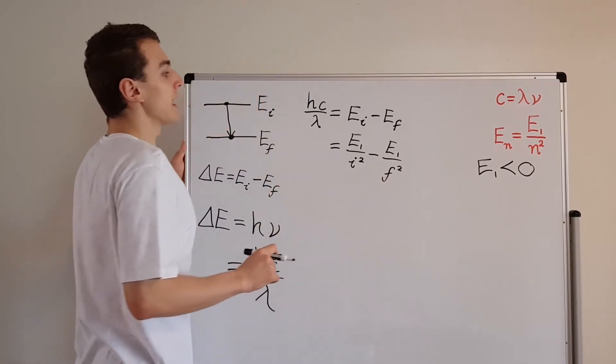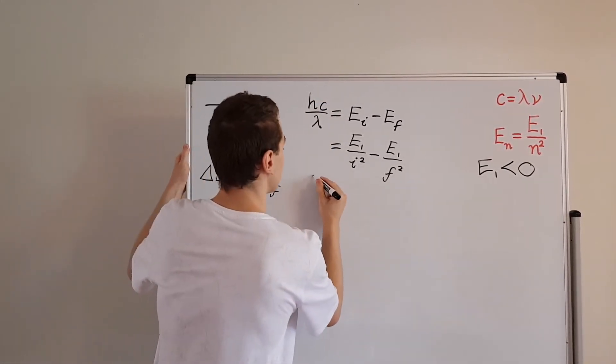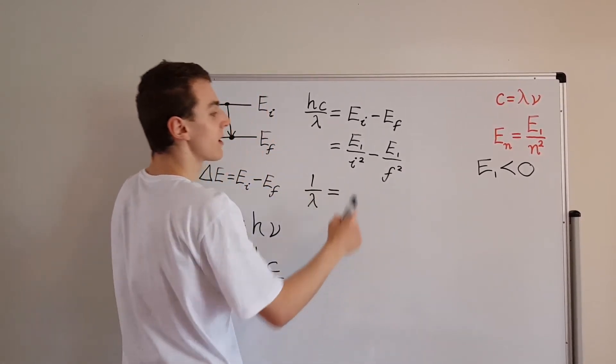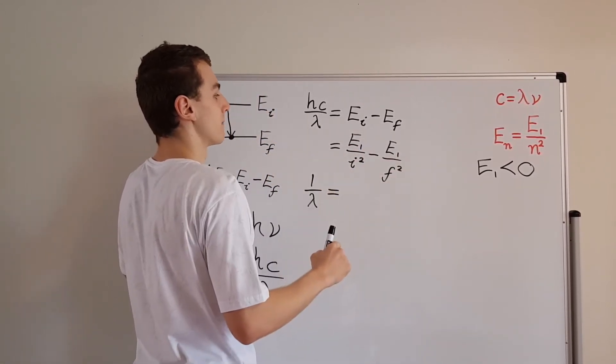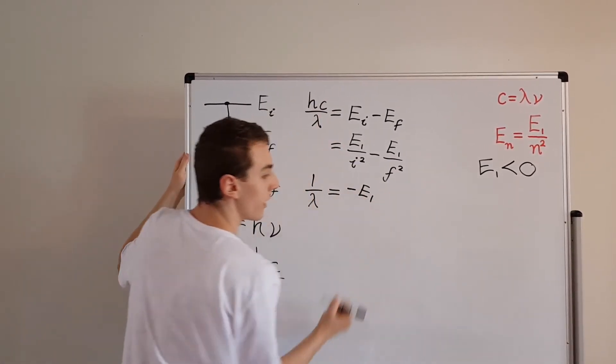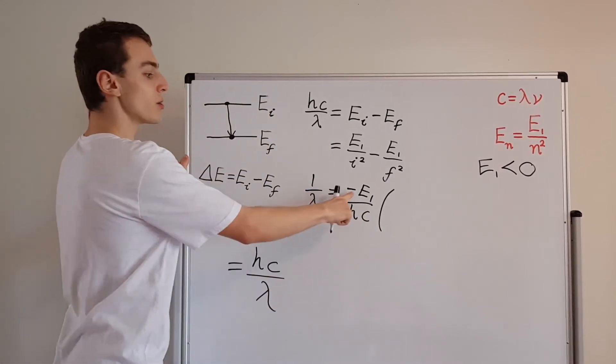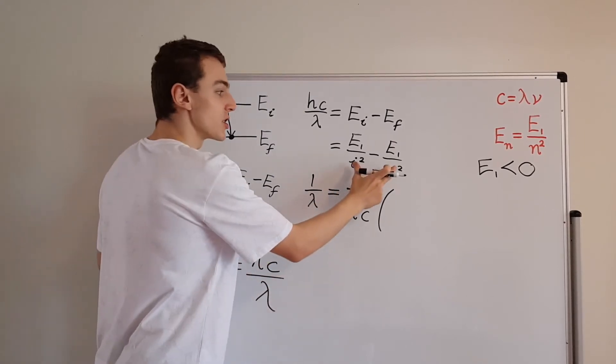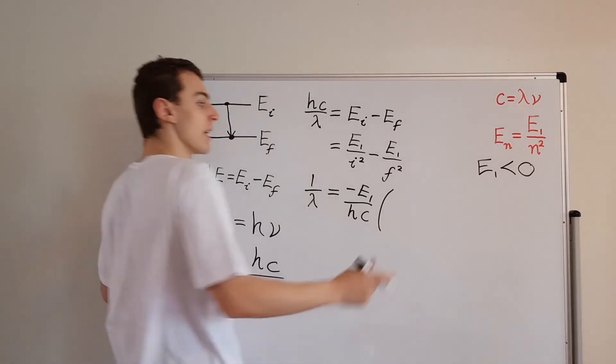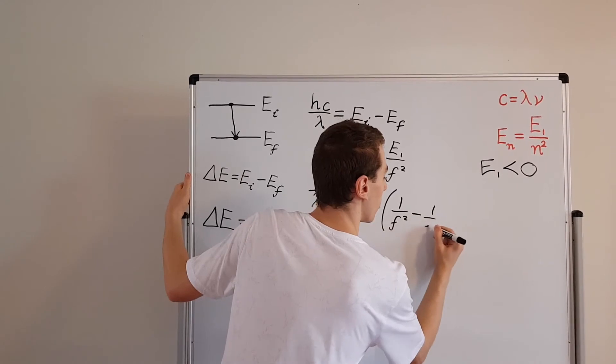So what we can actually do is we can divide both sides by hc and just get 1 on lambda. That's what we want, 1 on lambda. And what we can also do is we can factor out minus E1. So if we divide by hc and we factor out minus E1, we get minus E1 and we can divide by hc. And when we factor out a minus sign, that actually allows us to swap these guys around, because this guy is going to have a minus sign. This guy is going to turn into a plus. So what we'll have is 1 on f squared minus 1 on i squared.